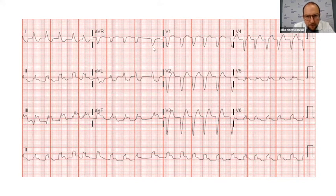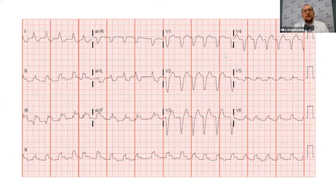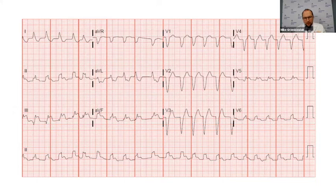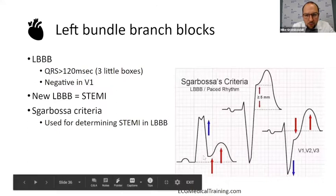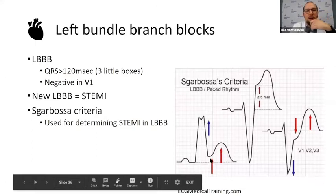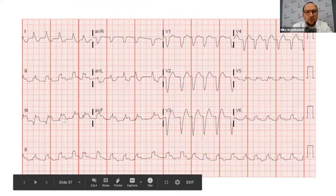Moving through the EKG, we know this is a wide QRS complex. Looking at V1 to determine left or right bundle: it's a wide QRS that's negative in V1 — negative in V1 means it's a left bundle branch block. It's negative in V1 and more than three little boxes, or greater than 120 milliseconds. Looking at the relevant lead, there are clear ST elevations definitely more than the one-millimeter Sgarbossa criterion. The QRS complex is positive, the T-wave is positive — you just need one millimeter elevation to be concerned for ischemia, and here we have four to five. This would be a STEMI.